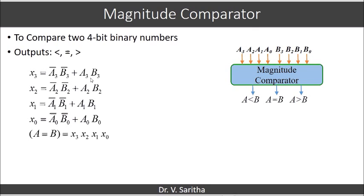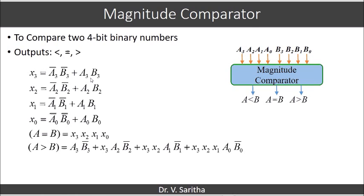That is the expression which shows A equals B. Now for A greater than B: comparing from the left-hand side, we first compare A3 and B3. For A to be greater than B at this stage, A3 should be 1 and B3 should be 0, which we represent as A3·B3'.